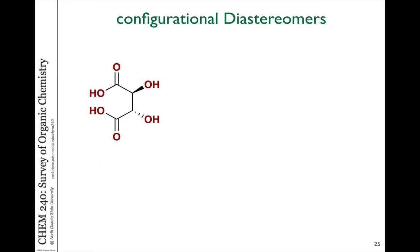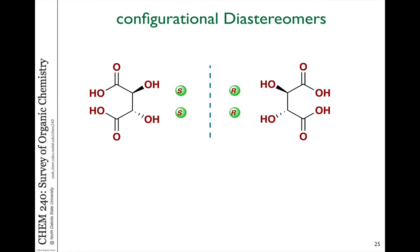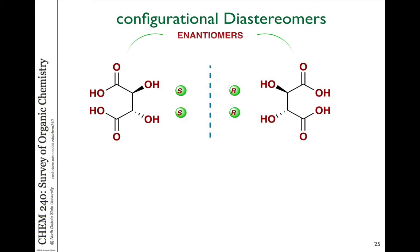To have a mirror image, every stereogenic carbon configuration in one molecule has to be the opposite in its mirror image. If we take a look at the enantiomer of tartaric acid, that enantiomer does have each configuration opposite — S becomes R in both of those stereogenic carbons. These are related as a pair of enantiomers: mirror image isomers that are not superimposable.